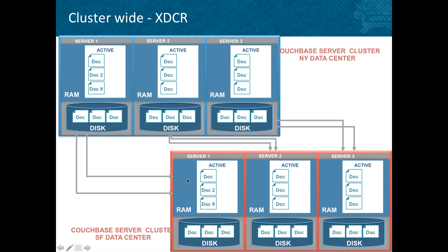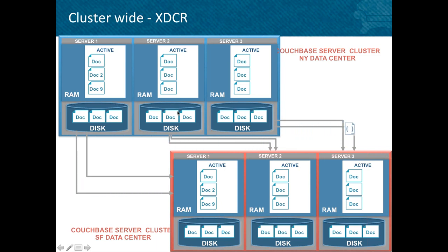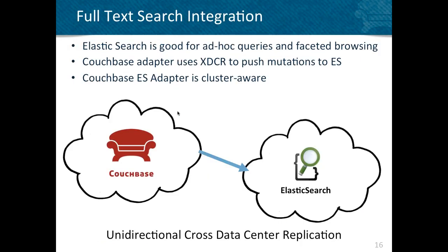As data is written into RAM and gets persisted, it also gets added to the XDCR queue and pushed over to the remote side — that's unidirectional replication. For bidirectional replication, you point a node in the remote cluster back to a node in the source cluster, giving you a master-master active-active replication setup where reads and writes can happen on both clusters in two different data centers. We have conflict detection as well as resolution to take care of conflicts.